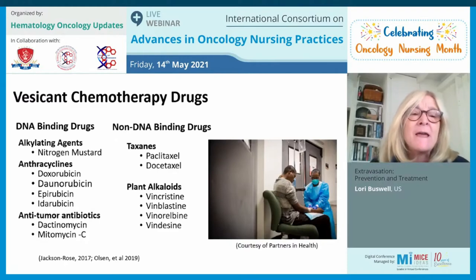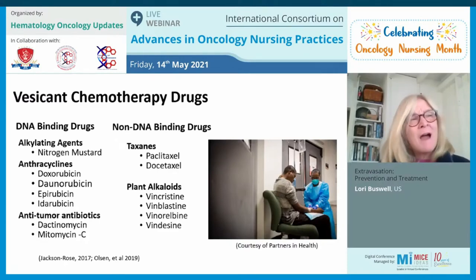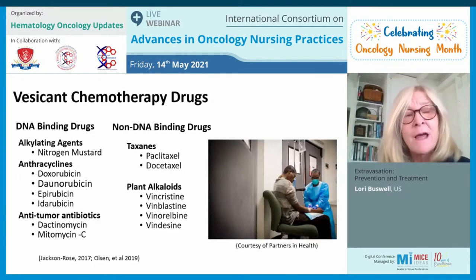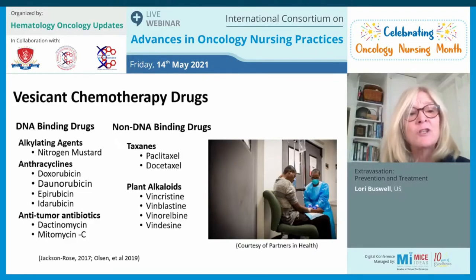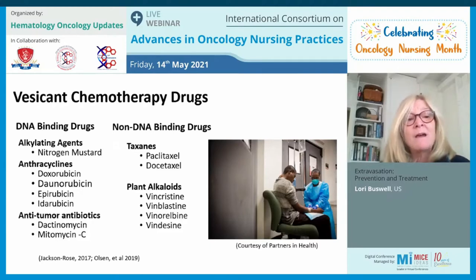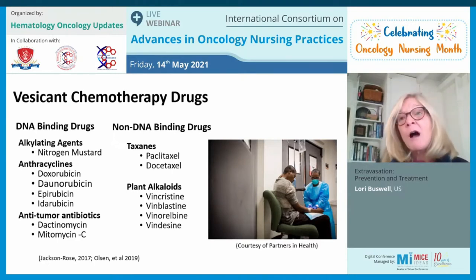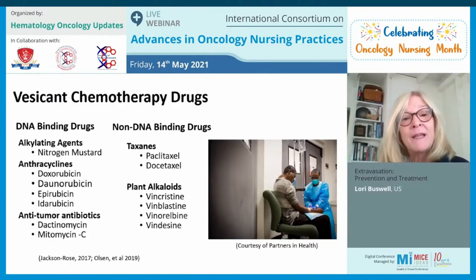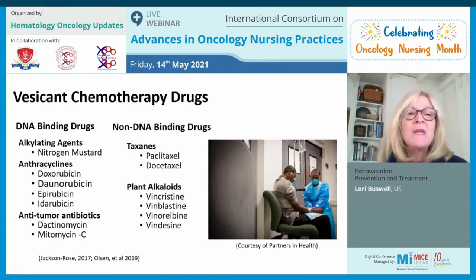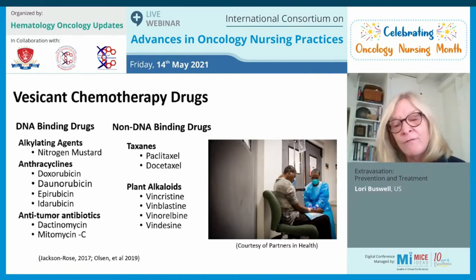These include nitrogen mustard, which is not used much in the United States anymore, though it may be used in MOPP chemotherapy for Hodgkin's disease. The anthracyclines — doxorubicin, daunorubicin, epirubicin, idarubicin, dactinomycin, and mitomycin C — are all very frequently used drugs, as are the taxanes and plant alkaloids like vincristine, vinblastine, and vinorelbine. These are the drugs we're talking about when we talk about vesicants.